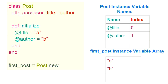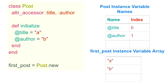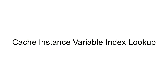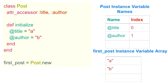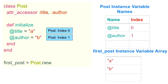There's one more caveat: we have the keys only once instead of duplicating them. But the hash lookup itself isn't actually cheap, and reading instance variables is one of the most common operations we do in Ruby. So we cache this instance variable lookup and use the class as the cache key. When we set title to A, on that instruction itself we cache that for the post class, the index of title is zero, and the index of author is one. That's how Ruby 3.1 works.